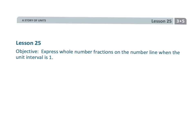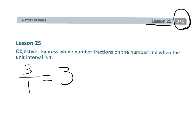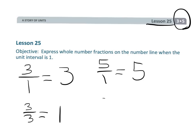That wraps up Grade 3, Module 5, Lesson 25, where students learn that three over one is equal to three, and five over one is equal to five, whereas three over three is equal to one and five over five is equal to one.